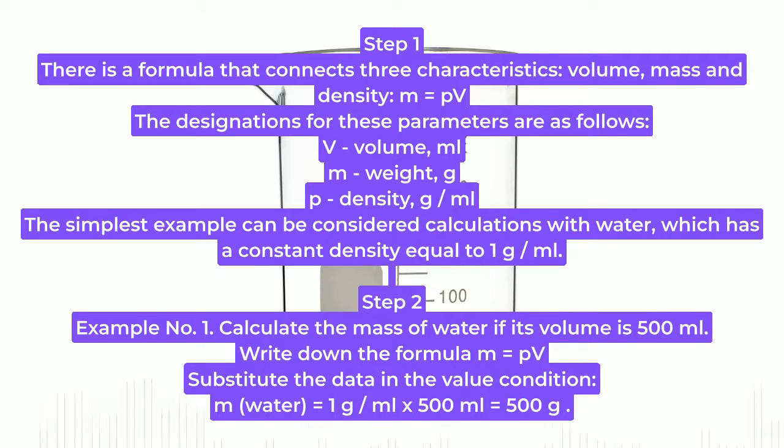Step 2, Example 1: Calculate the mass of water if its volume is 500 milliliters. Write down the formula m = pV. Substitute the data from the condition: m(water) = 1 g/ml × 500 ml = 500 g.